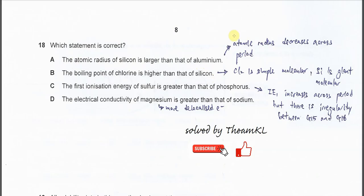First, when going across the period, the atomic radius becomes smaller. This is because the nuclear charge increases, the shielding from the inner shell is almost constant, and the attraction of the nucleus to the valence electron is stronger.